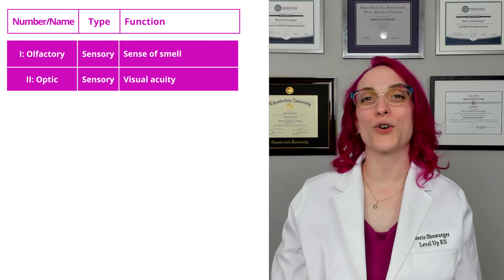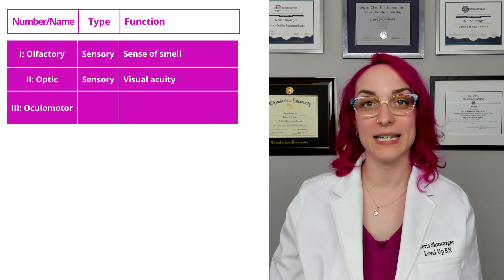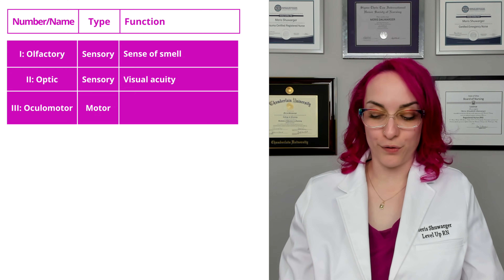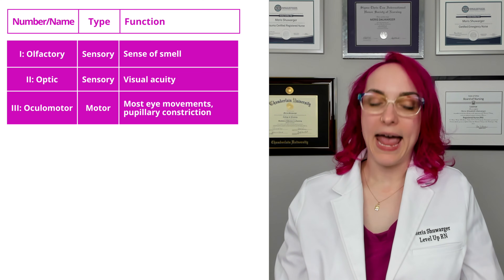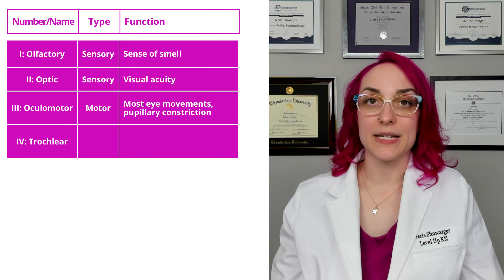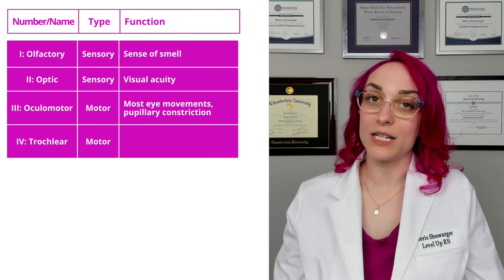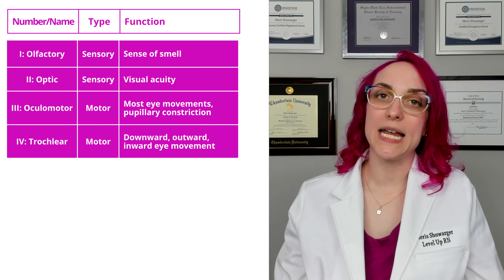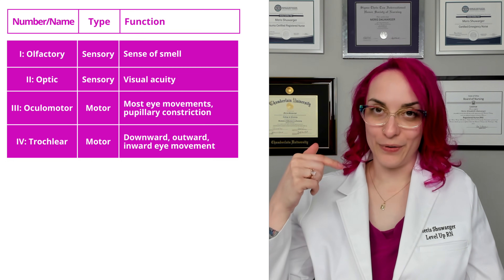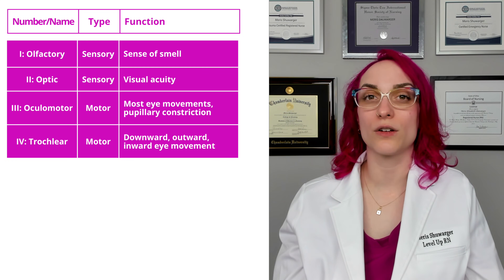Cranial nerve 3 is oculomotor. As its name may suggest, it is a motor-only neuron, and the function of cranial nerve 3 is most eye movements and pupillary constriction. Cranial nerve 4 is your trochlear nerve, which is also a motor neuron. This one controls downward, inward, and outward movements of the eyes — so down, in, and out, just not up — and it doesn't control pupil constriction either.